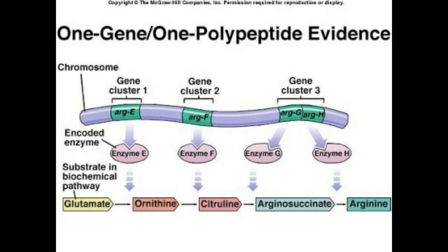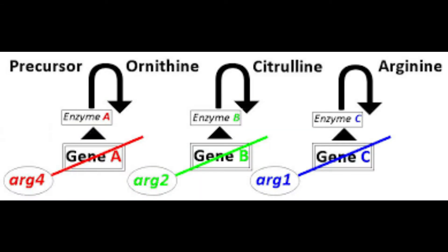For example, on a chromosome: gene cluster 1, gene cluster 2, and gene cluster 3. Gene cluster 1 regulates arginine E, gene cluster 2 regulates arginine F, gene cluster 3 regulates arginine G, and gene cluster H regulates arginine GH. Gene cluster 1 encodes enzyme E, gene cluster 2 encodes enzyme F, gene cluster 3 encodes enzyme G, and gene cluster H encodes enzyme H.